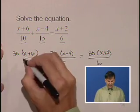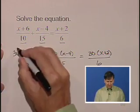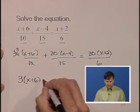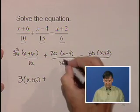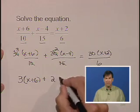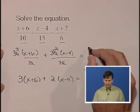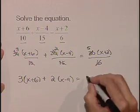When we cancel the 10 with the 30, we get 3. So we have 3 times x plus 6 plus canceling the 15 with the 30, we get 2 times x minus 4. Canceling the 6 with the 30, we get 5 times x plus 2.